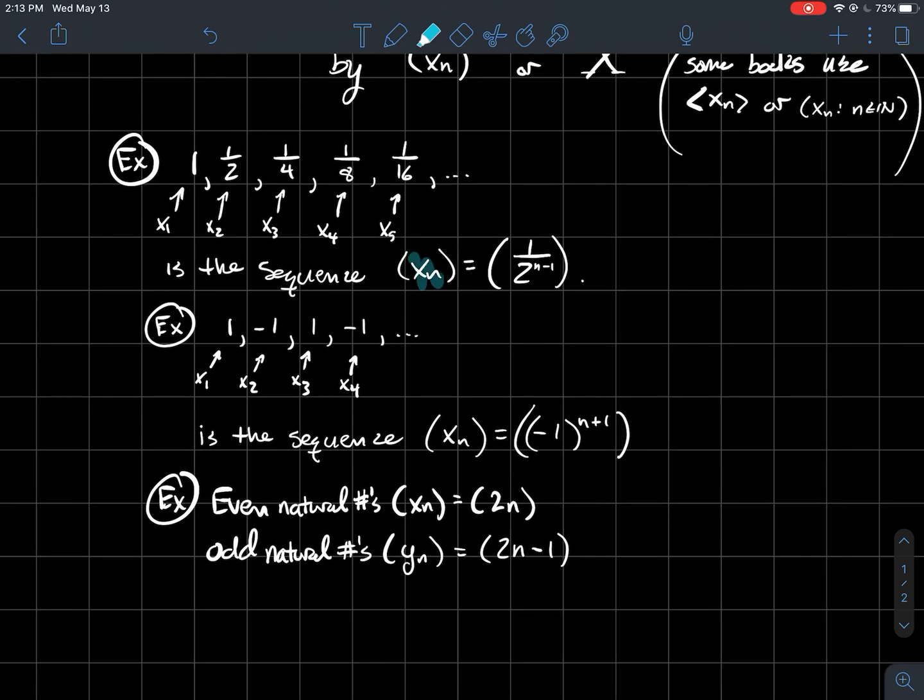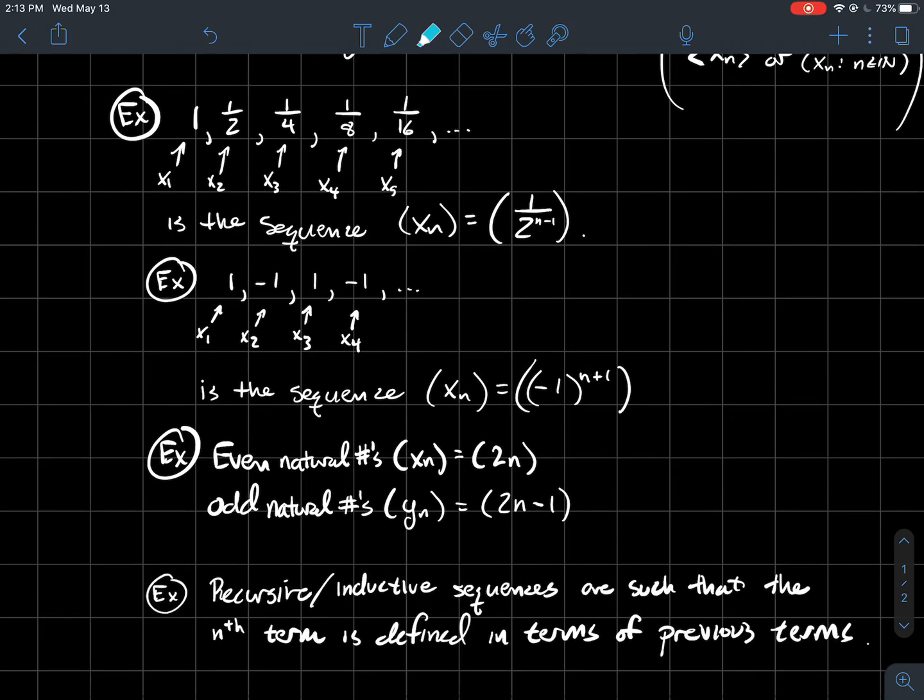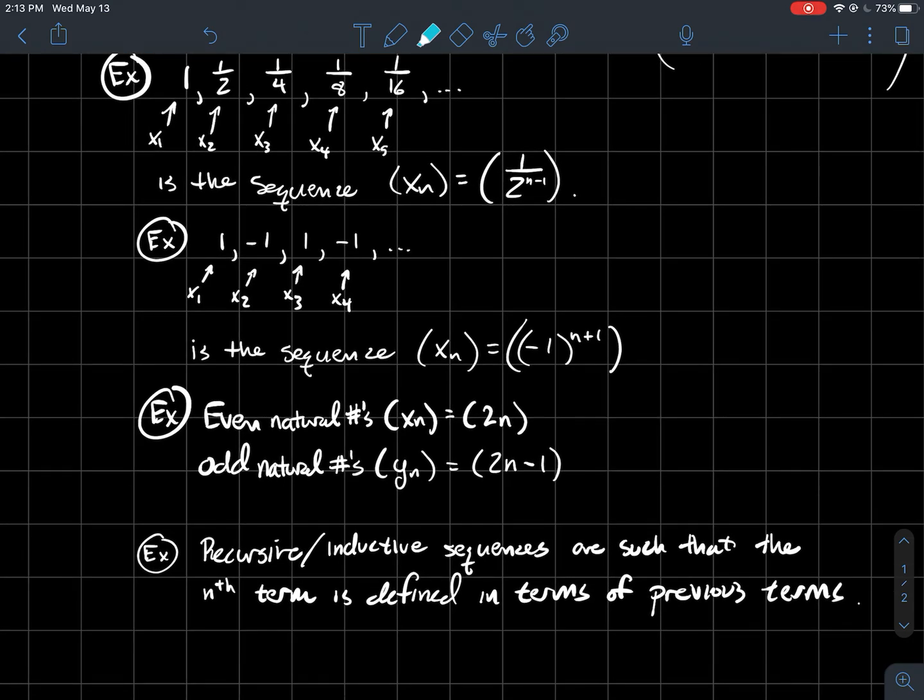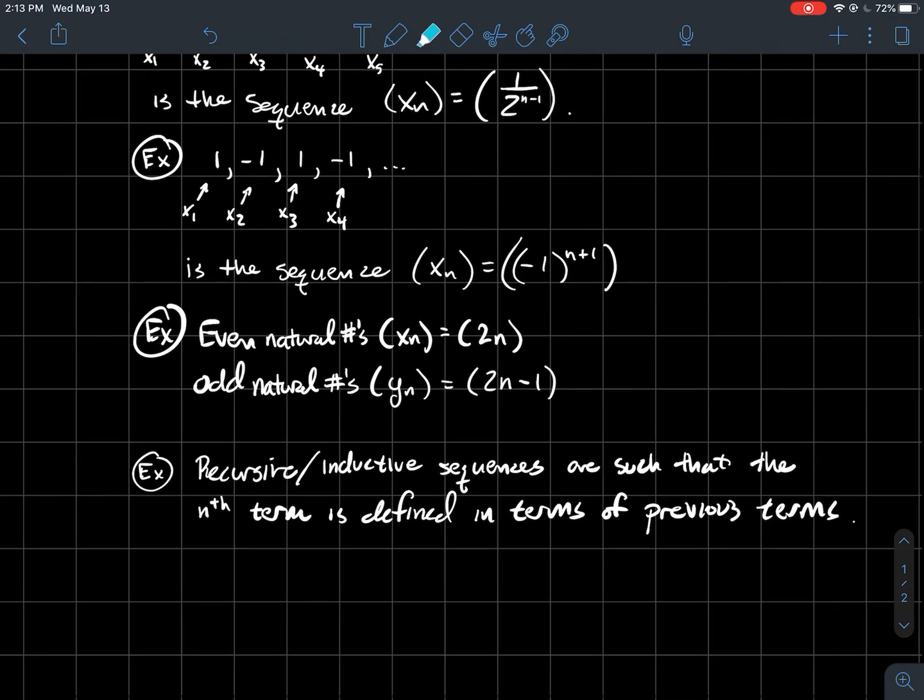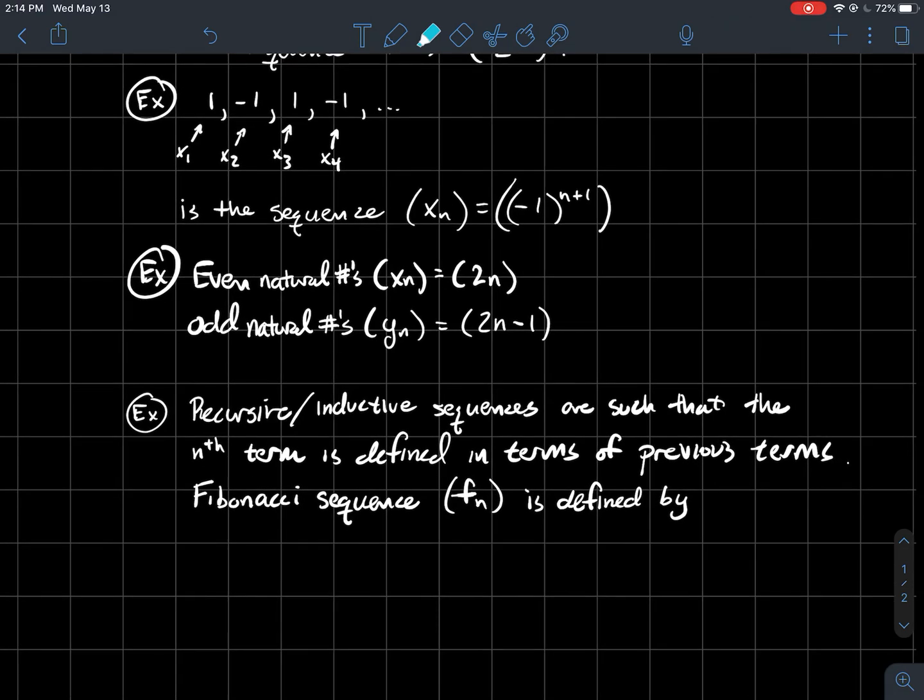By the way, we'll use xₙ a lot of the time, but it's pretty typical in textbooks to use really any letter sub n. What is another common type of sequence? How about a recursive or an inductive sequence? Those are just synonyms for each other. The nth term is just defined in terms of the previous ones. So maybe one of the most famous recursive sequences is the Fibonacci sequence.